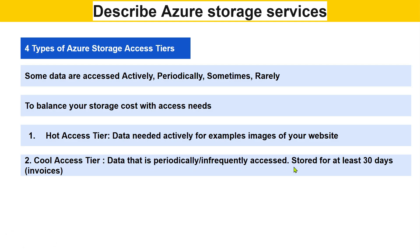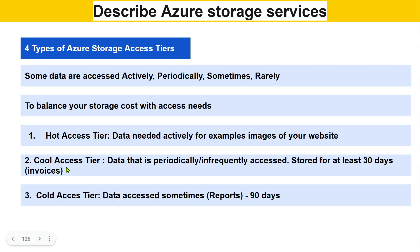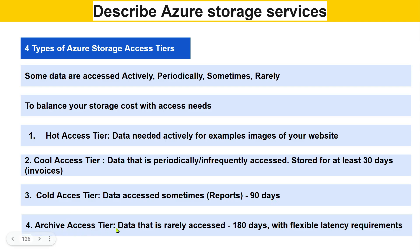Cool tier stores data for at least 30 days — for example, customer invoices. Cold access tier is for data that is rarely accessed, with a retention period of 90 days. Archive access tier is for old data that is rarely accessed, with a retention period of 180 days.